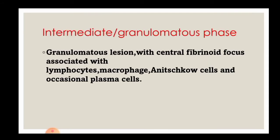Now for the intermediate or granulomatous phase - it is pathognomonic of rheumatic myocarditis. It is a granulomatous lesion with a central fibrinoid focus associated with lymphocytes, macrophages, Anitschkow cells, and occasional plasma cells.